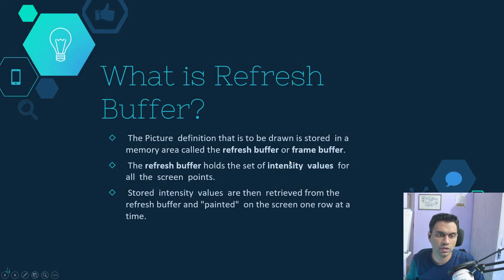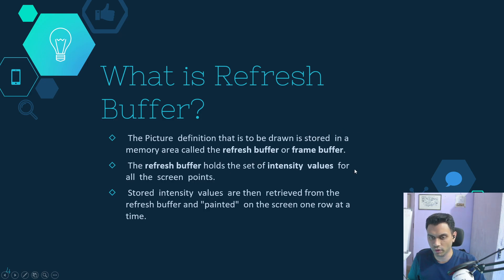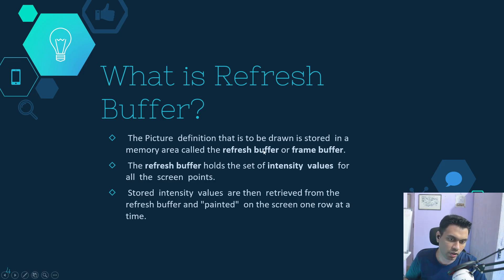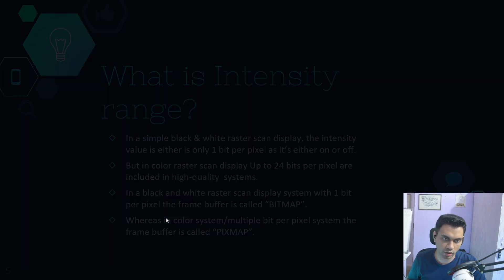Now let's look at the refresh buffer. The picture definition to be drawn is stored in a memory area called the refresh buffer or frame buffer. All information about which points are to be illuminated and which are not is stored here, along with intensity values of either 0 or 1. These stored intensity values are then retrieved from the refresh buffer and painted on the screen one row at a time.